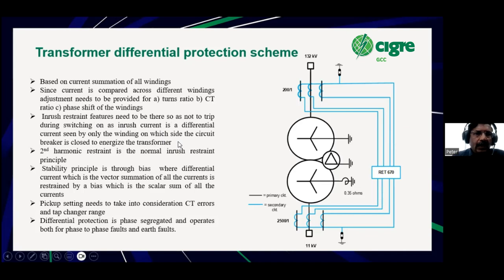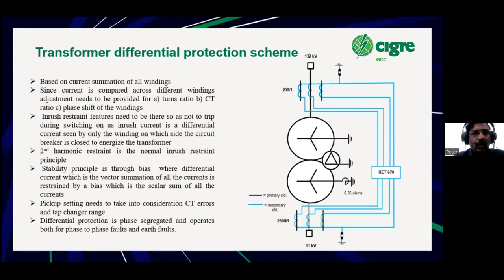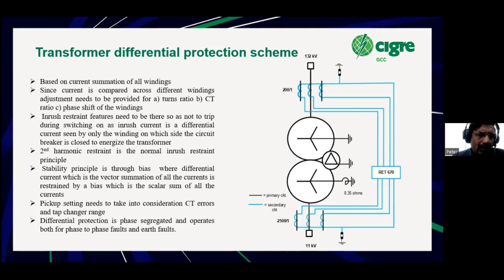We need to bear in mind the concept of cross-blocking used by relay manufacturers. If the inrush setting is 10%, when you switch on it might be above 10% for one phase but not necessarily for the other phases, or it can decay quickly for one or two phases. So as long as there is inrush more than 10% in any one of the phases, there will be a cross-blocking feature available. But when a fault appears and there's a big jump in fundamental, the relay has ways of sensing that and operating for a fault.